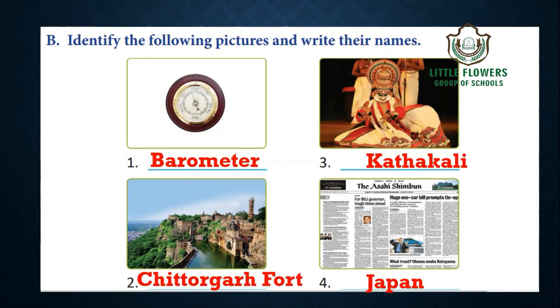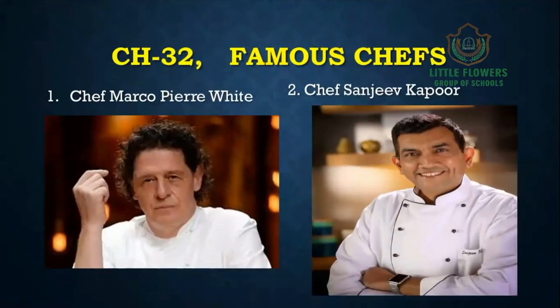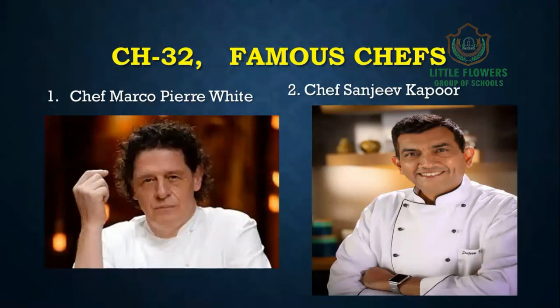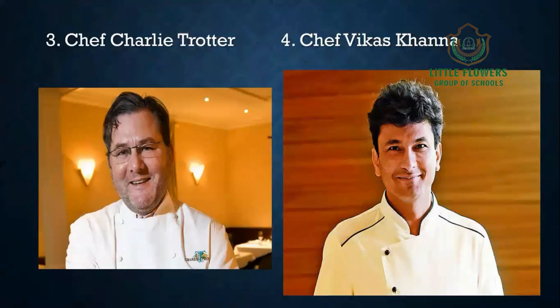Now exercise number 32: Famous Chefs. You have to identify the pictures and write their names. First is Chef Marco Pierre White, a famous British chef. Second is Chef Sanjeev Kapoor, a famous Indian chef. Third is Chef Charlie Trotter, who was an American chef. Fourth is Chef Vikas Khanna, who is famous throughout the world and is an Indian chef.